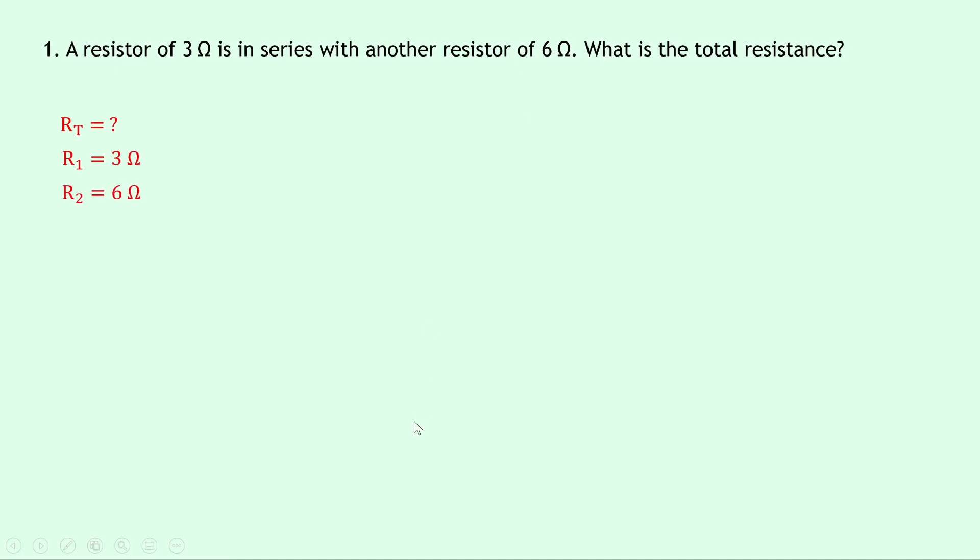Then writing down our equation for resistors in series, we have RT equals R1 plus R2. Substituting in the numbers gives us 3 plus 6, which equals 9 ohms. Hopefully quite straightforward there.